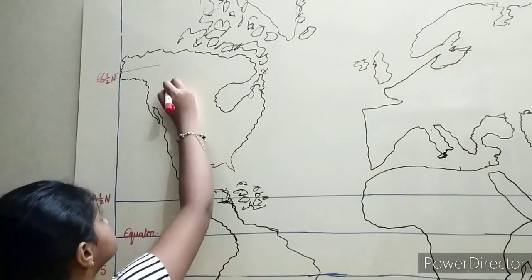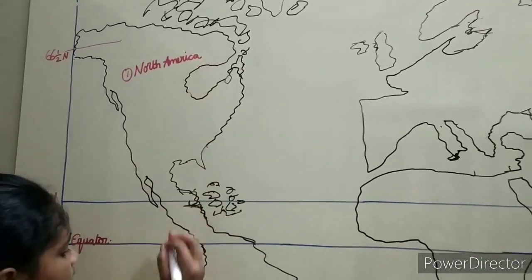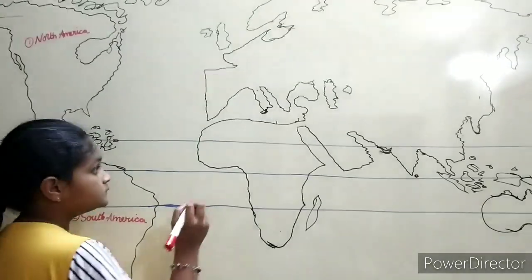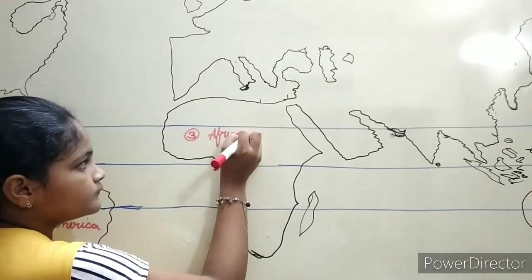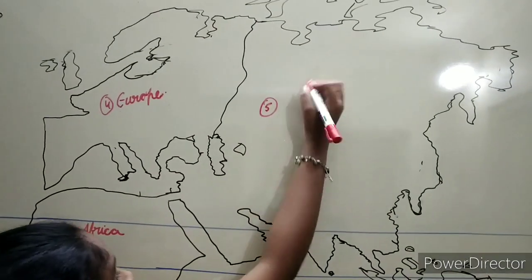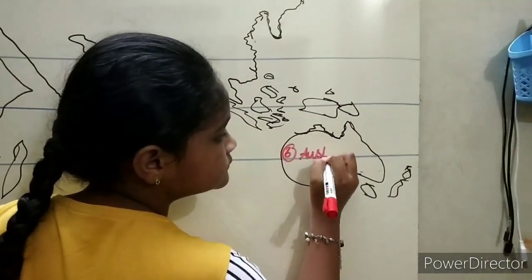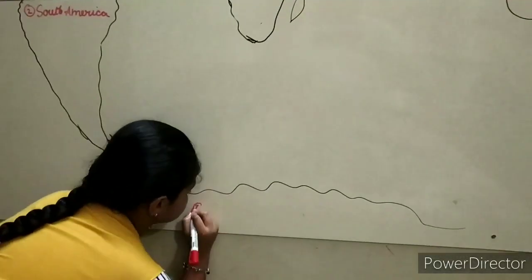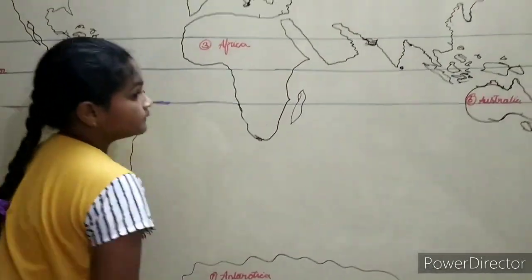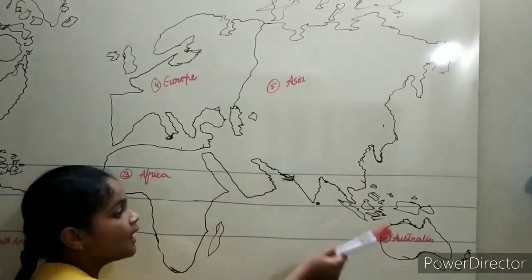Now, continents. First, North America. Next, South America. Third, Africa. Fourth, Europe. Fifth, Asia. Sixth, Australia. And finally seventh, Antarctica. To repeat: North America, South America, Africa, Europe, Asia, Australia, and Antarctica.